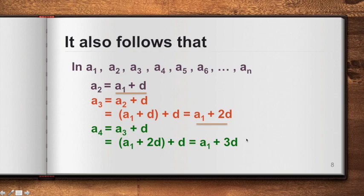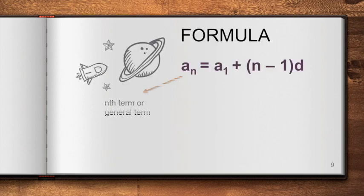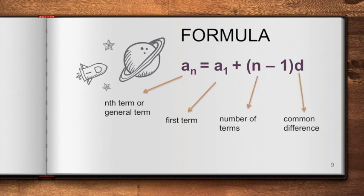There's a pattern going on: a2 is a1 plus d, a3 is a1 plus 2d, a4 is a1 plus 3d. In general, we arrive at the formula: a sub n equals the first term plus (n minus 1) times d. Here a sub n is the n-th term or general term, a sub 1 is the first term, n is the number of terms, and d is the common difference. Note that n must be a positive integer like 1, 2, 3, 4, 5, and so on.